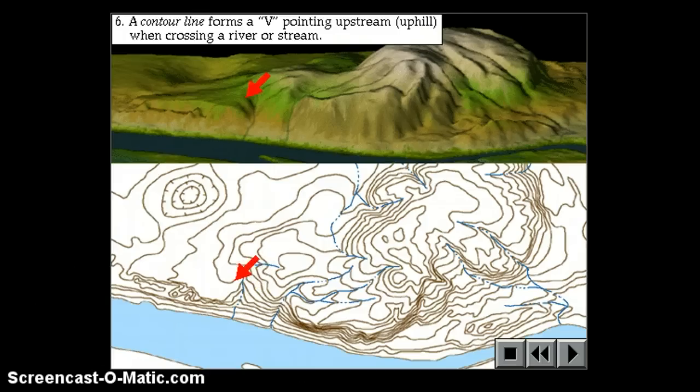Contour lines that form a V shape point upstream when crossing a river. So, V's indicate valleys and V's point upstream. So, a V that has a river in it is a valley and the crotch or pointy part of the V is pointing uphill or upstream.